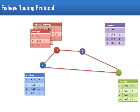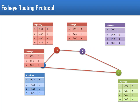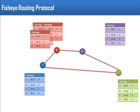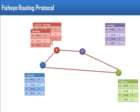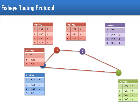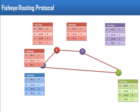Global State Routing is actually a special case of Fish Eye Routing Protocol - in Global State Routing there is only one scope, and it works like a Fish Eye Routing Protocol. This is the way Fish Eye Routing Protocol works. If you have any doubts you can comment or send an email - my email ID is also mentioned in the description. Thank you very much for watching.